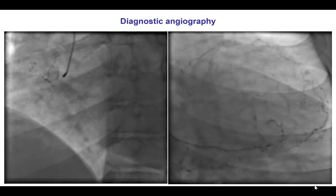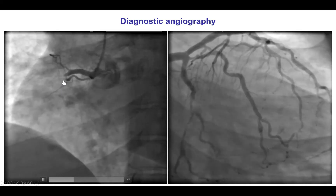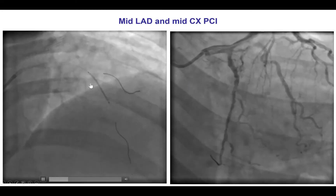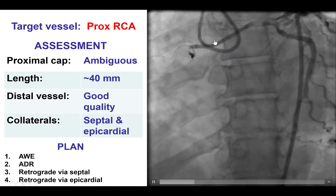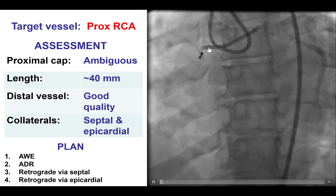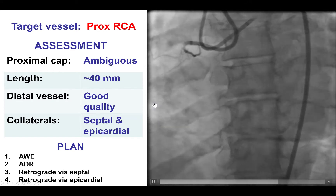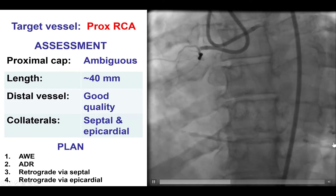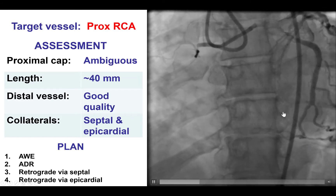These were the images for the initial presentation. She had a CTO of the proximal right coronary artery with a small marginal branch originating at the proximal cap. She also had significant lesions in the circumflex and mid-LAD, which were successfully treated with drug-eluting stent implantation. Dual injection, which is critical for planning CTO-PCI, demonstrated a blunt proximal cap. The occlusion length was approximately 40 millimeters, the distal vessel was of good quality with some disease, and collaterals included an epicardial collateral from the apical LAD and septal collaterals connecting from the LAD to the PDA.